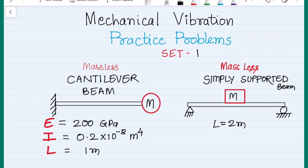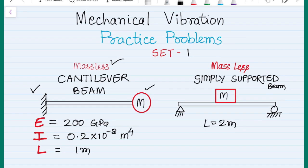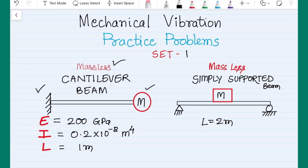Hello everyone and welcome to this practice problem set number one. In this problem set we are going to talk about two very important problems and we are going to calculate the natural frequency of these two systems. In the first case I am having a massless cantilever beam connected with a tip mass. In the second case the beam is again massless but it is a simply supported beam and the mass is connected at the center of the beam.